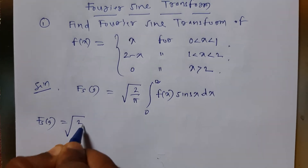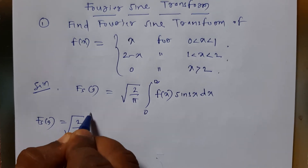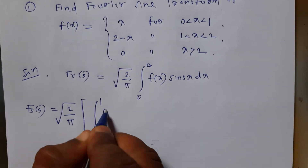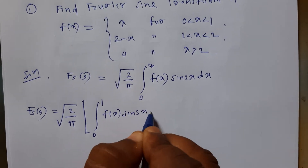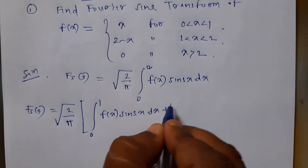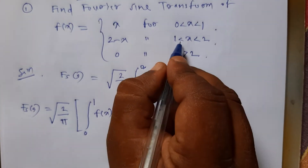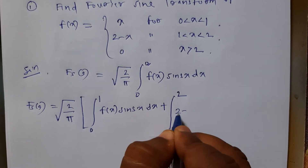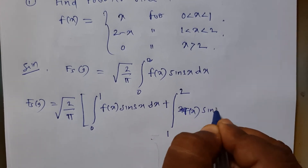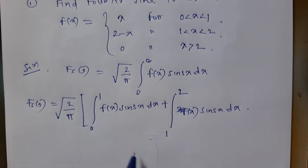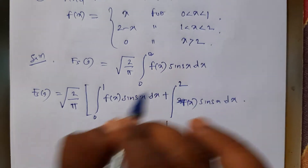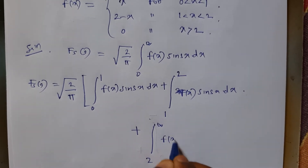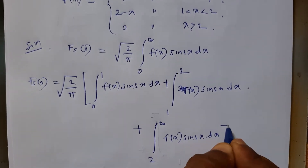Therefore F_s(s) is equal to square root of 2 upon pi. The first range I will divide as 0 to 1, as per the given problem: f(x) into sine(sx) dx, plus integration over the second range 1 to 2, and the third one for x greater than 2, written as integration from 2 to infinity of f(x) sine(sx) dx.